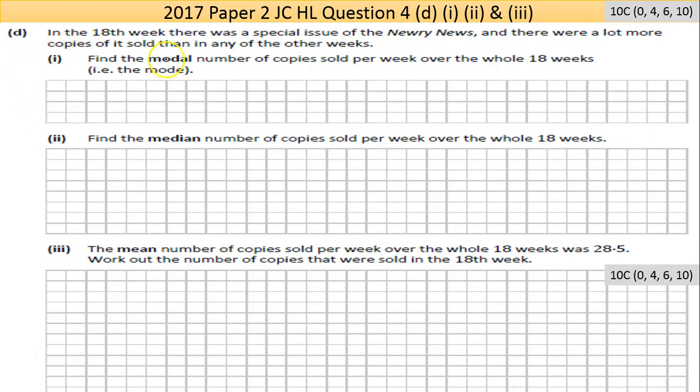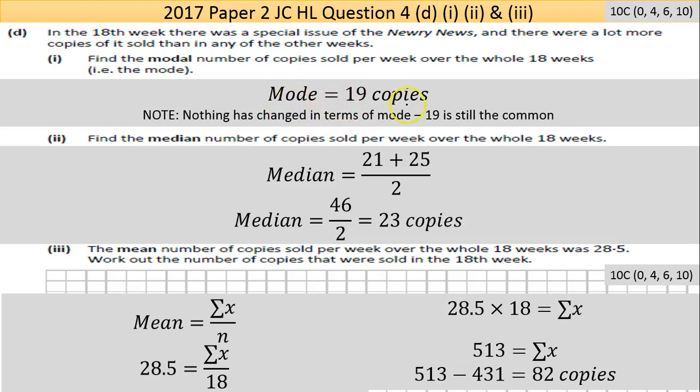So there's part C, now part D here. There's a 10C grade going on here for part 3. Usually you see three parts together, they're marked together, but that's not in this case. In the 18th week, there was a special issue of the Newry News, and there were a lot more copies of it sold than in any other weeks. Find the modal number of copies sold per week over the 18 weeks, that is the mode. The mode is the 19 copies. Now no matter how many copies are sold in the 18th week, it won't mean that there's more than 19 copies. 19 occurs three times, no matter what the number is, if it's more than 14 to 47, whether it's the biggest number, that can't occur more than three times, because it's only occurring once. So the mode doesn't change, it's still 19. If you understand the mode, you understand that, it's pretty tricky. You have to really understand the mode and the complexity of what they're asking.